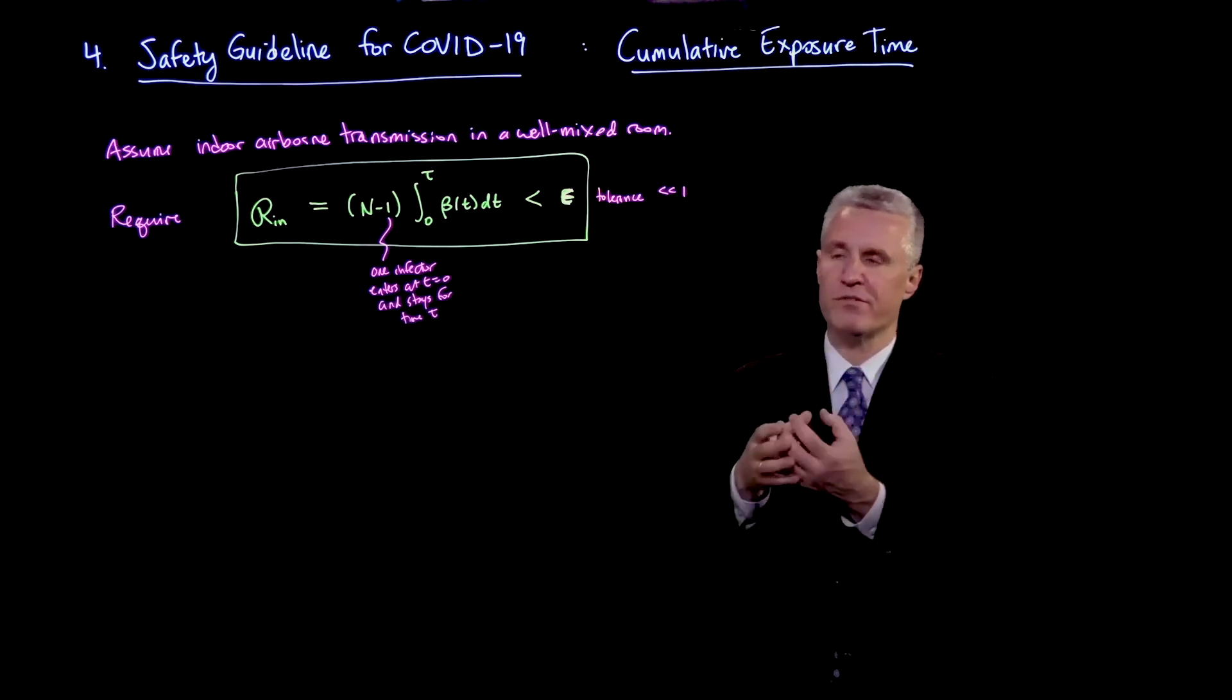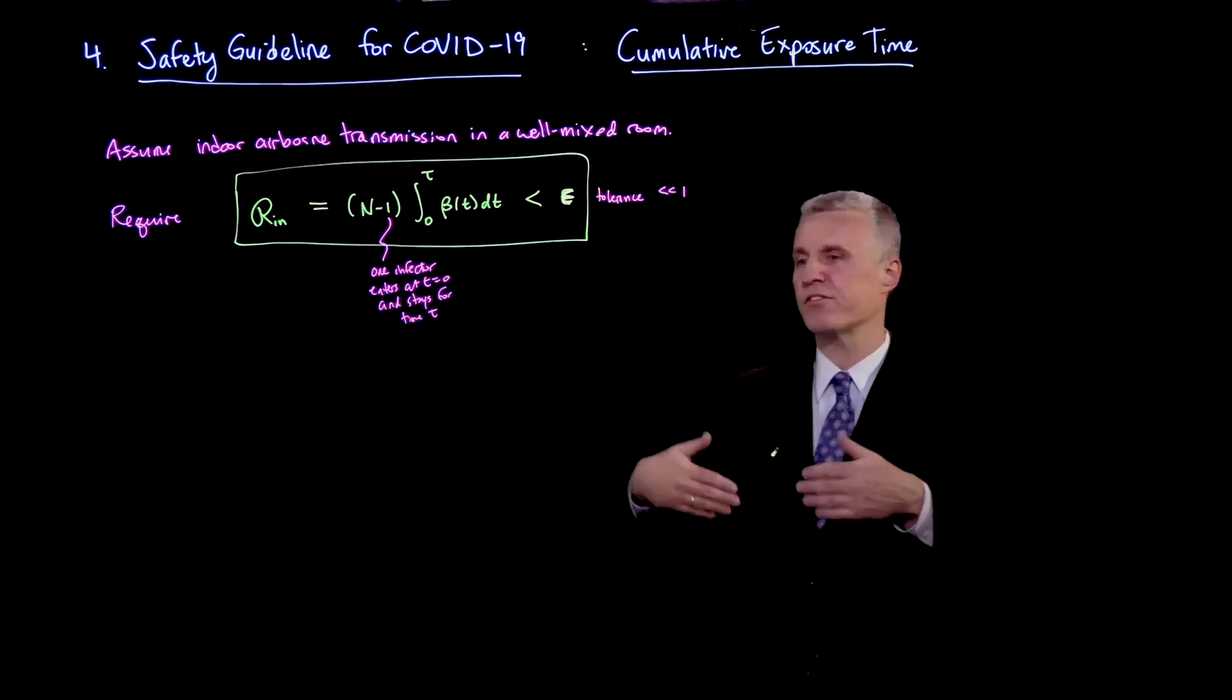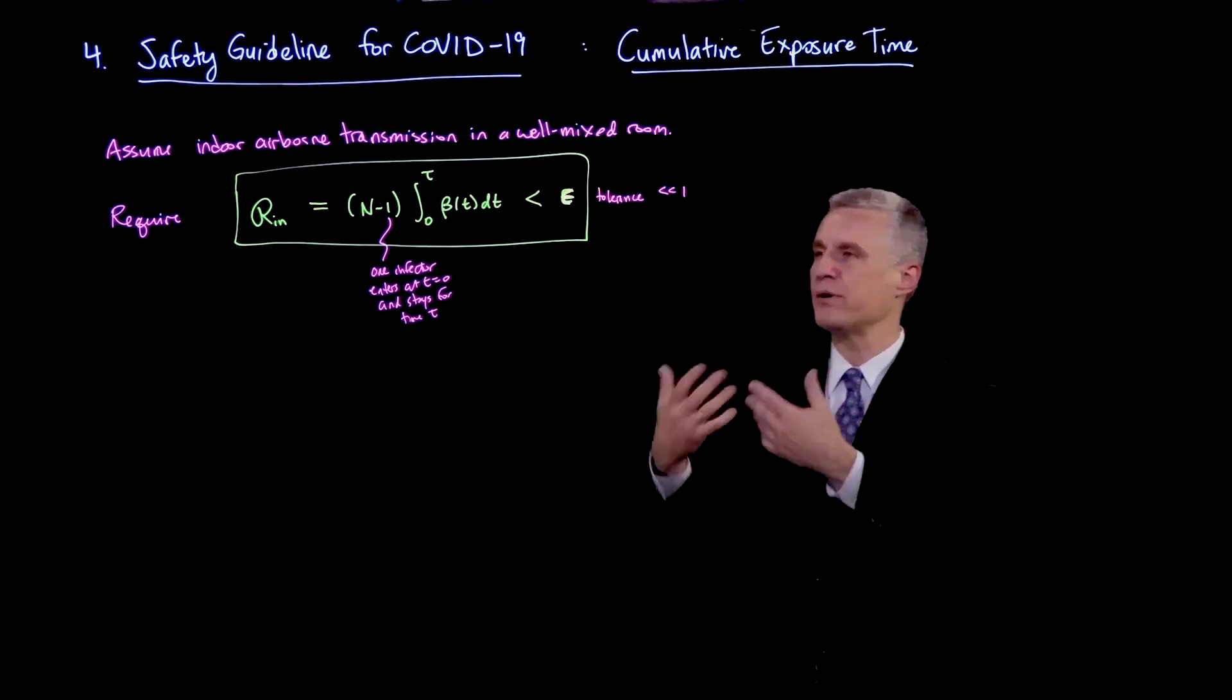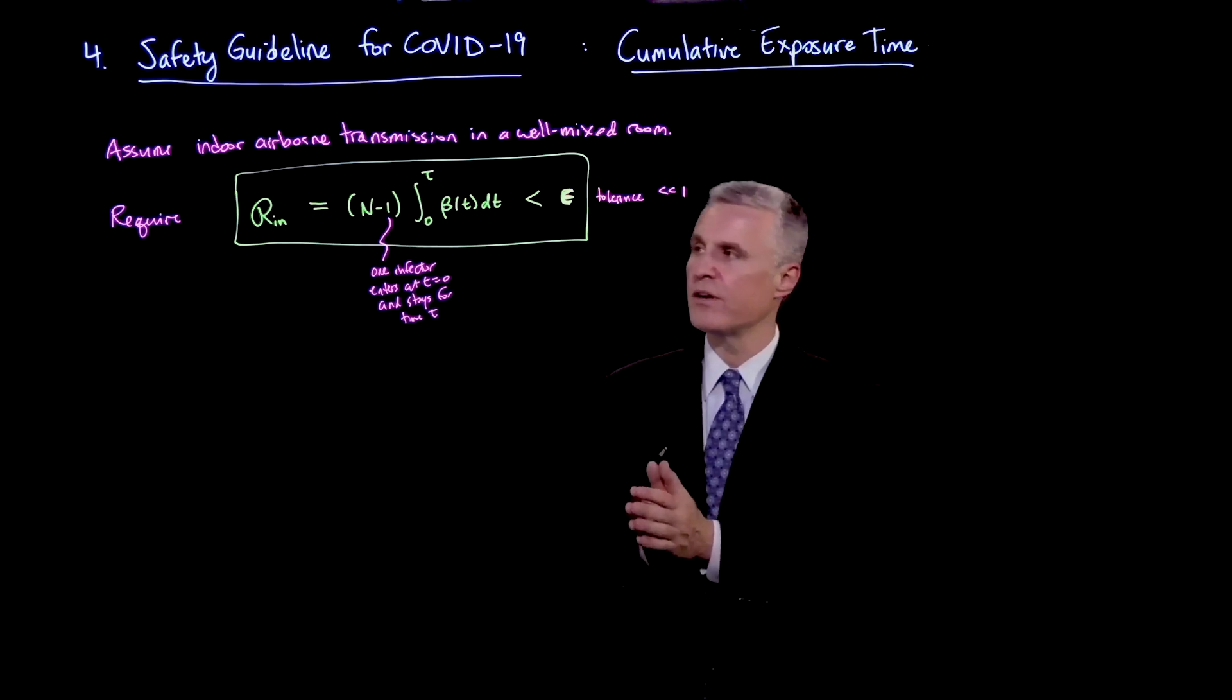In other words, if there's one infector, they don't infect another one. So the fact that there are more infectors gives a chance of at least some infection, but this seems like a more general and simpler criterion.